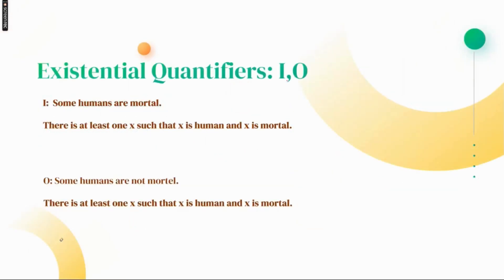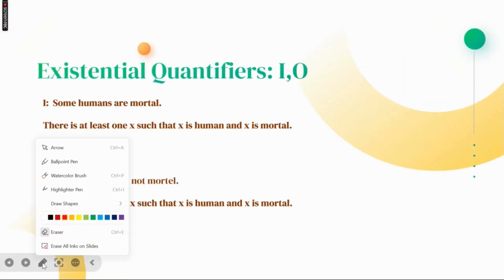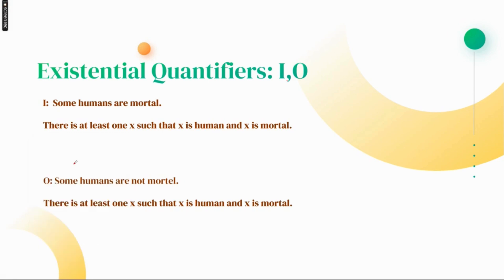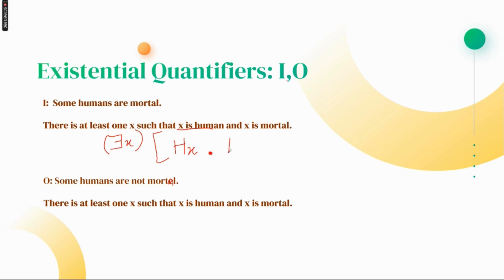Moving to existential quantifiers — we have I and O propositions. For I proposition: 'Some humans are mortal.' For this we use the existential quantifier symbol. There is at least one X such that X is human — H is the attribute — and we use dot, then MX. So: existential quantifier X, HX dot MX.